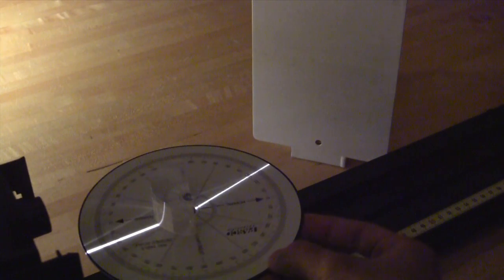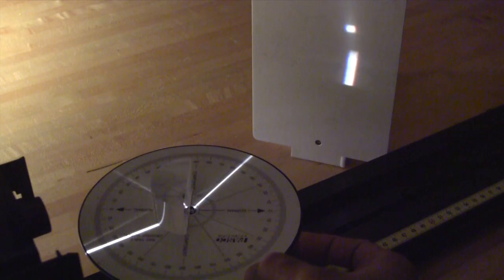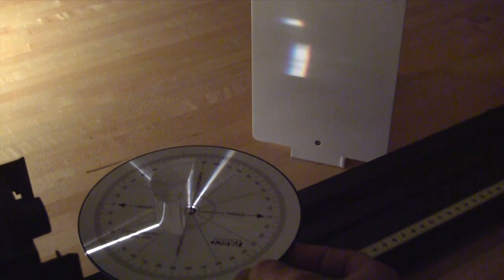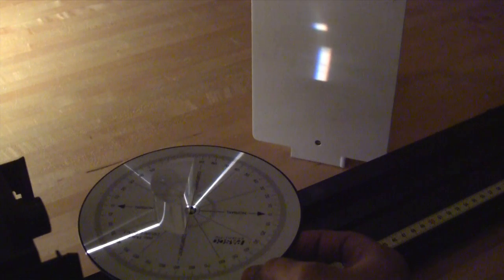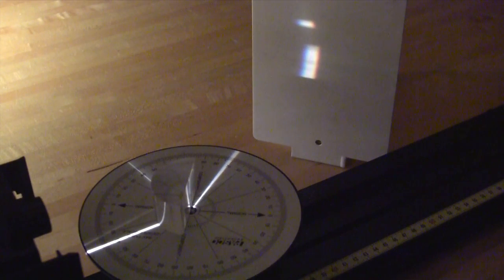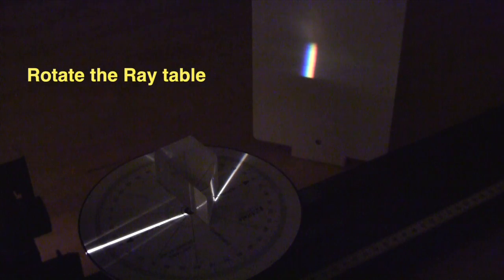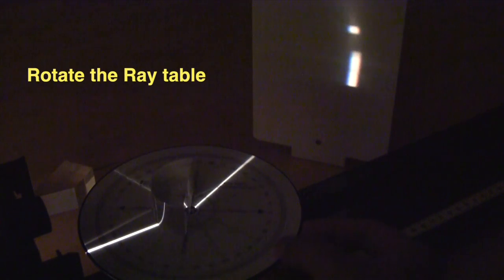Because index of refraction depends slightly on wavelength of light, some colors kink more than the others and it makes it possible to separate the spectral colors. Rotate the ray table such that the angle of refraction is almost 90. This will create a dispersion pattern and you can see that some colors are indeed kinked more than the others.